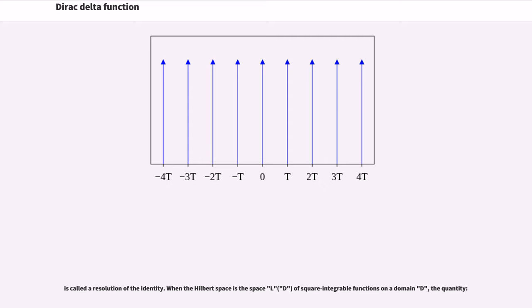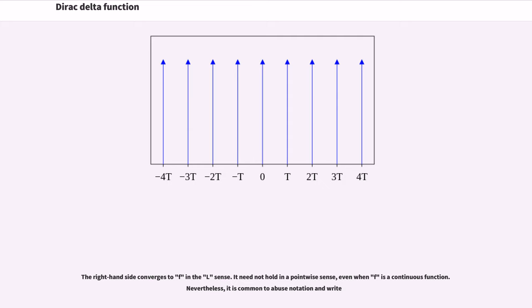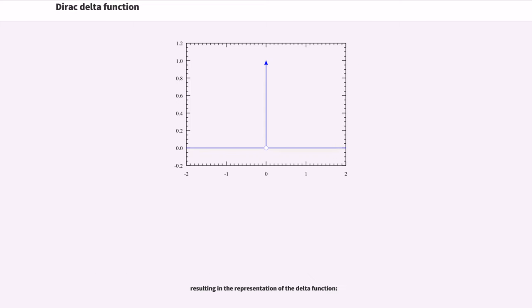When the Hilbert space is the space L²(D) of square integrable functions on a domain D, the expansion quantity is an integral operator, and the expression for f can be rewritten accordingly. The right-hand side converges to f in the L² sense; it need not hold in a pointwise sense, even when f is a continuous function. Nevertheless, it is common to abuse notation and write the resulting representation of the delta function.